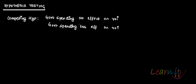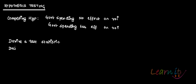You pick everything in advance — your test statistic and your level of significance at which you want to test your hypothesis. You derive a test statistic and you also derive a decision rule.